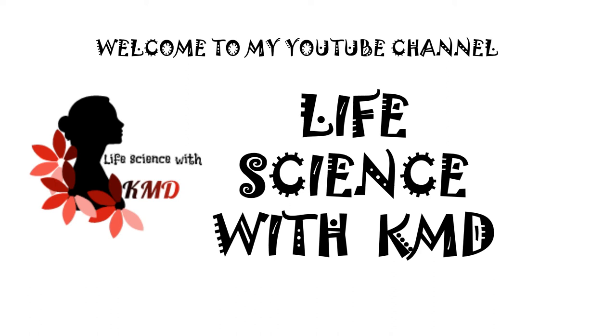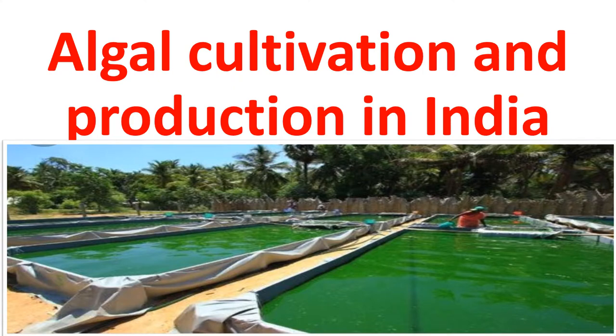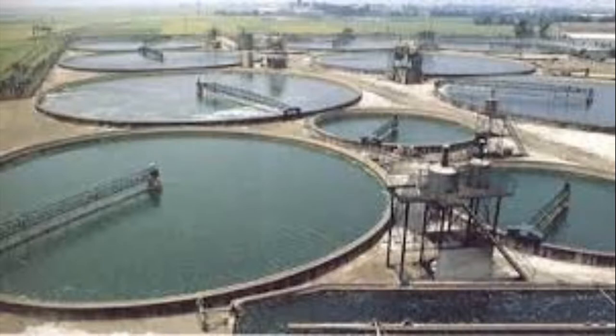Welcome to Life Science with KMD. Today I'm going to explain about algal cultivation and production in India. Algae are morphologically simple, chlorophyll-containing organisms that range from microscopic and unicellular to very large and multicellular. Algal culture is a form of aquaculture involving the farming of species of algae. Commercial and industrial algae cultivation has numerous uses.